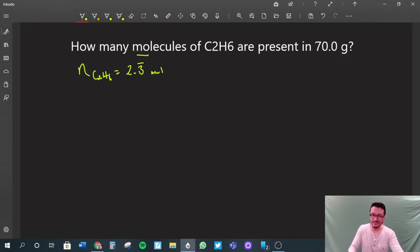The mantra in our class is when we don't know what to do, or even if you do, the first thing you should do after you have everything balanced is find the number of moles. Since we already did that in the previous question, let's plug this into our factor label method.